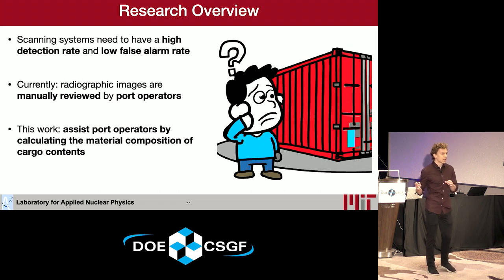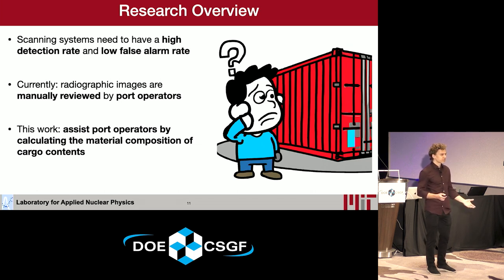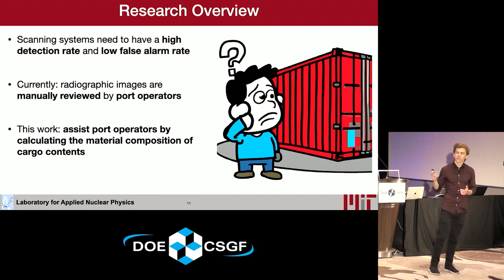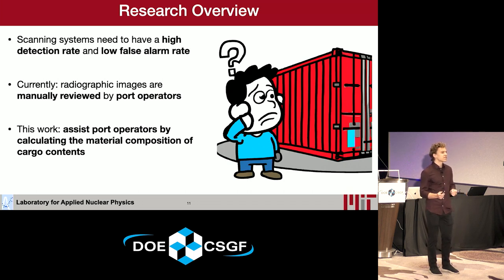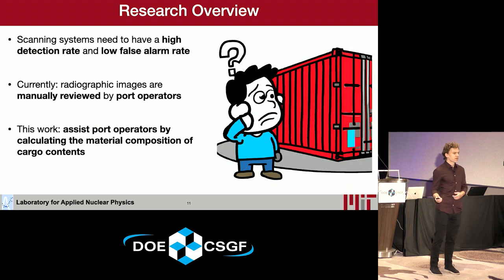This is obviously very expensive and cost prohibitive. In order to convince the government to spend $30 billion on scanners, we have to be sure they work. Currently, these scans are manually reviewed by port operators, which introduces the possibility of human error and suggests there is room for improvement using automated image analysis techniques to assist port operators in predicting material composition and identifying nuclear or radiological materials hidden inside containers.